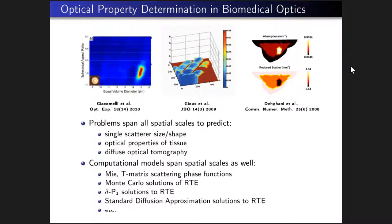Because of that, the computational models have to span the different spatial scales as well. Giacomelli's group uses Mie and T-matrix scattering phase functions to analyze tissue. For thicker tissues, Monte Carlo methods are used to solve the radiative transport equation. Vassan showed nice results of how well Delta P1 does in solving the radiative transport equation for certain problems, and standard diffusion has also been utilized quite a bit to solve the RTE.